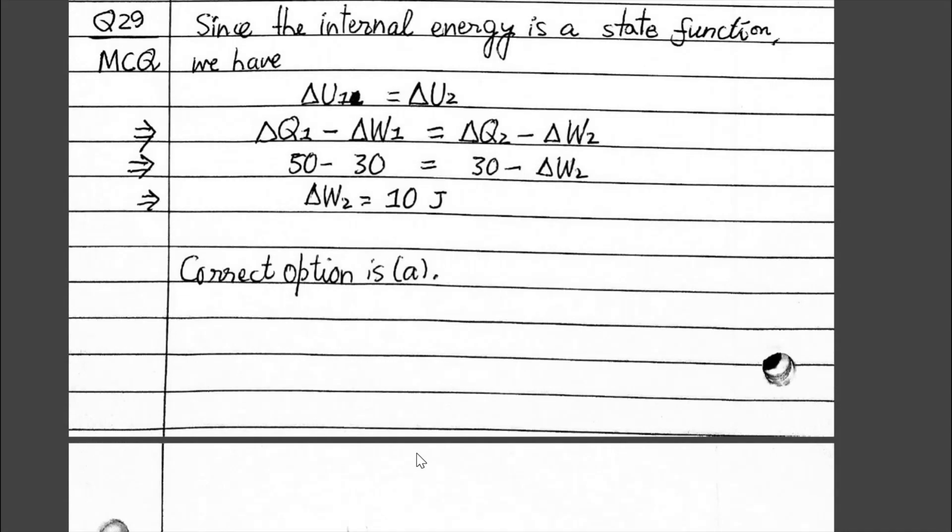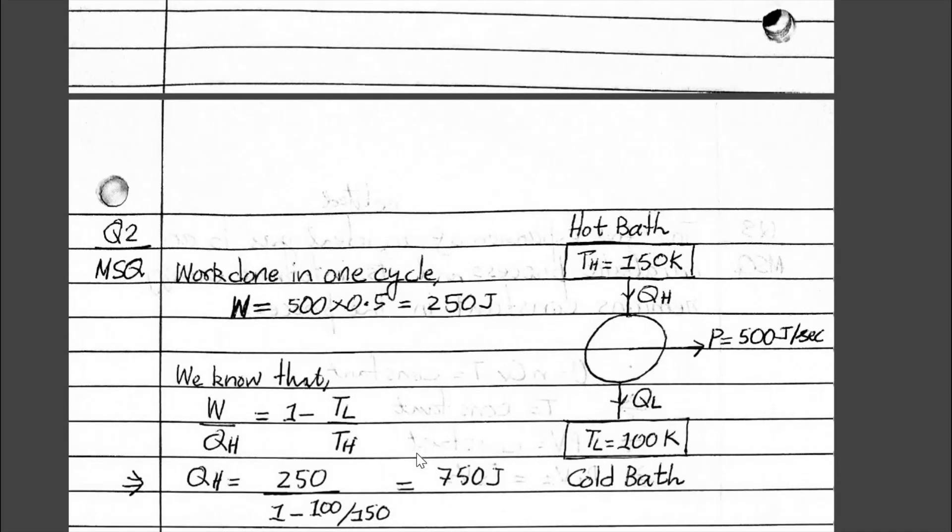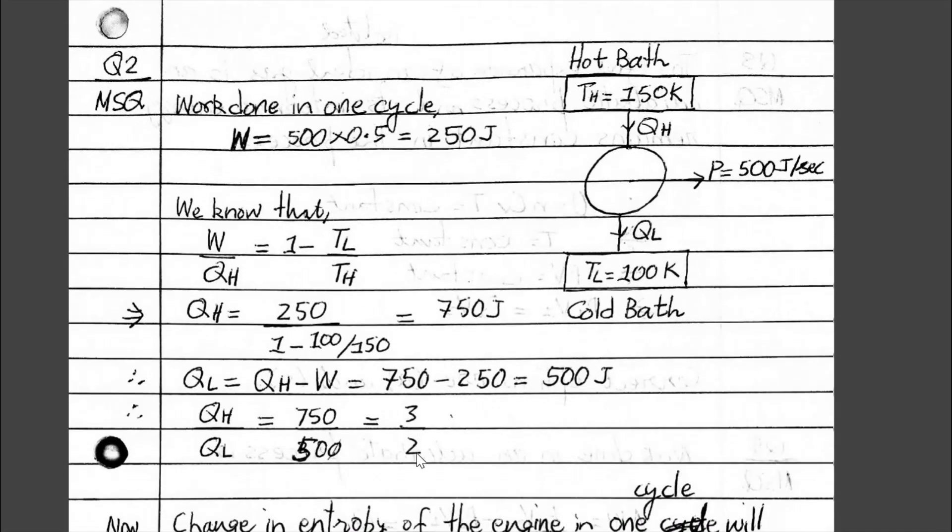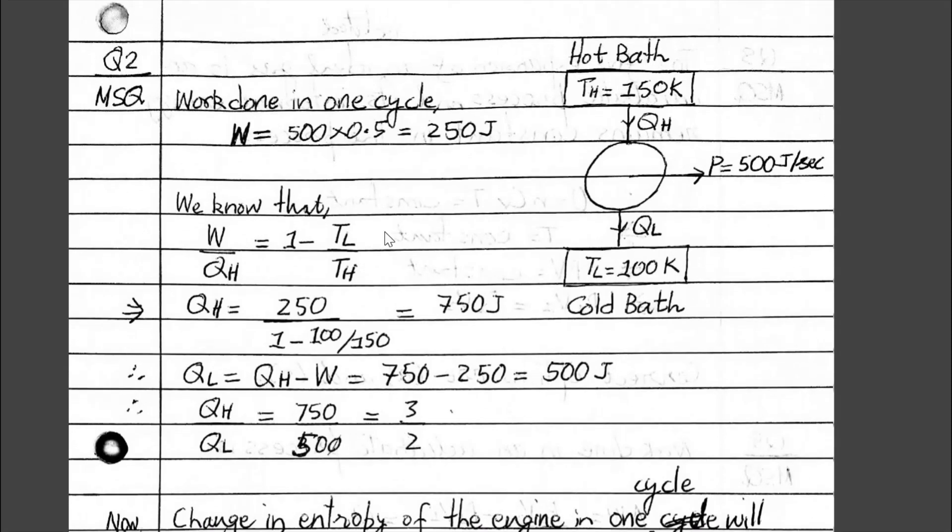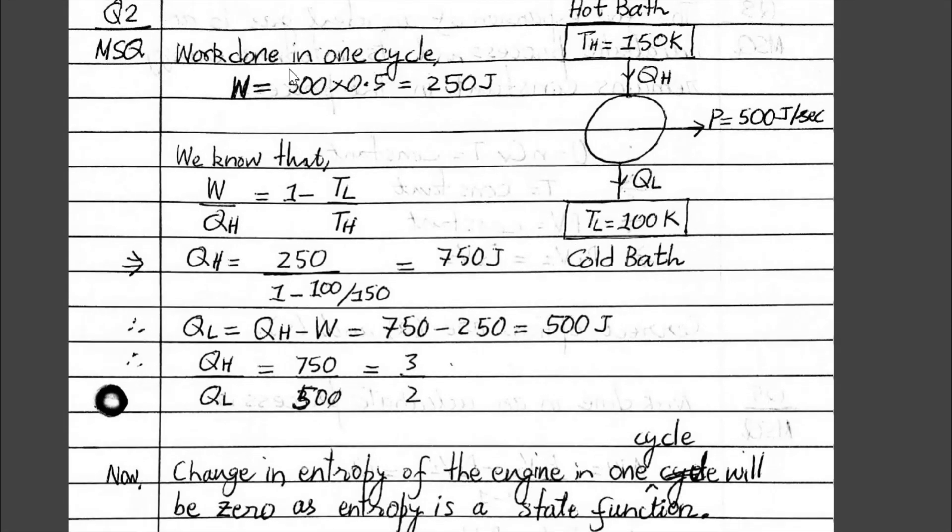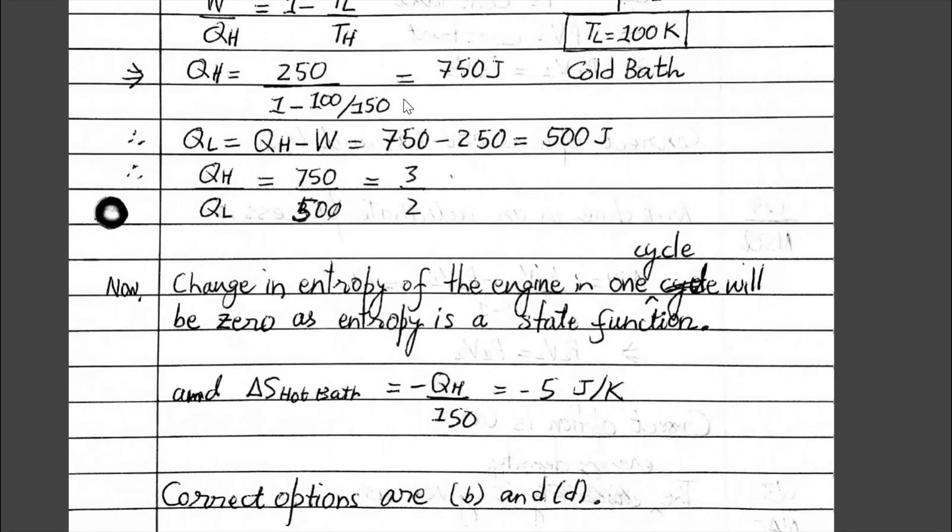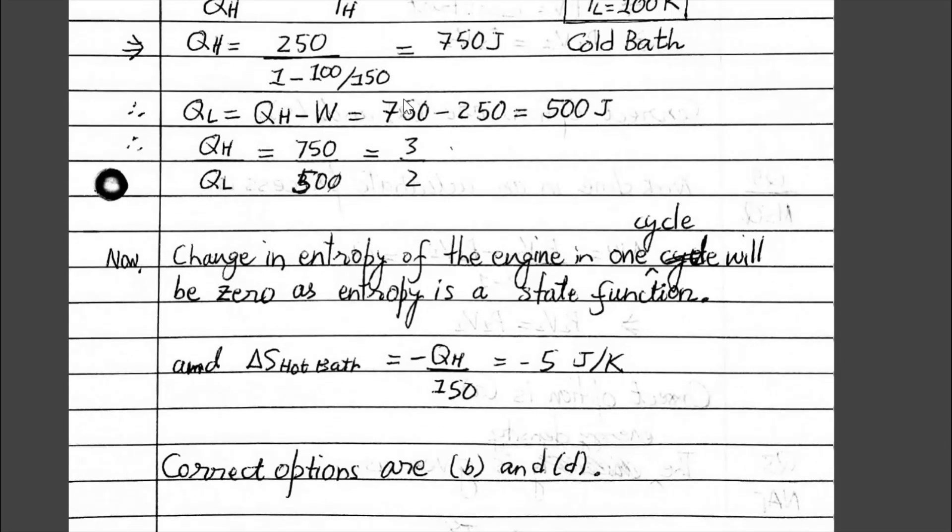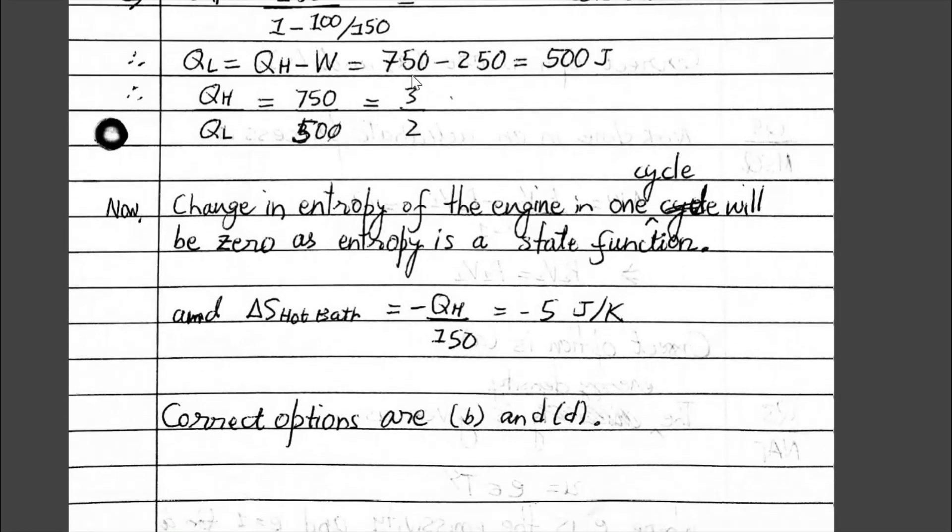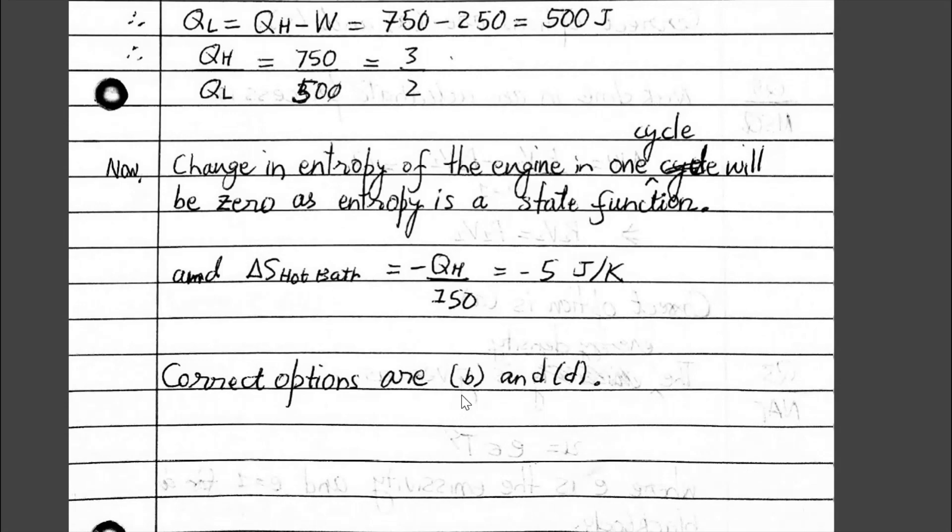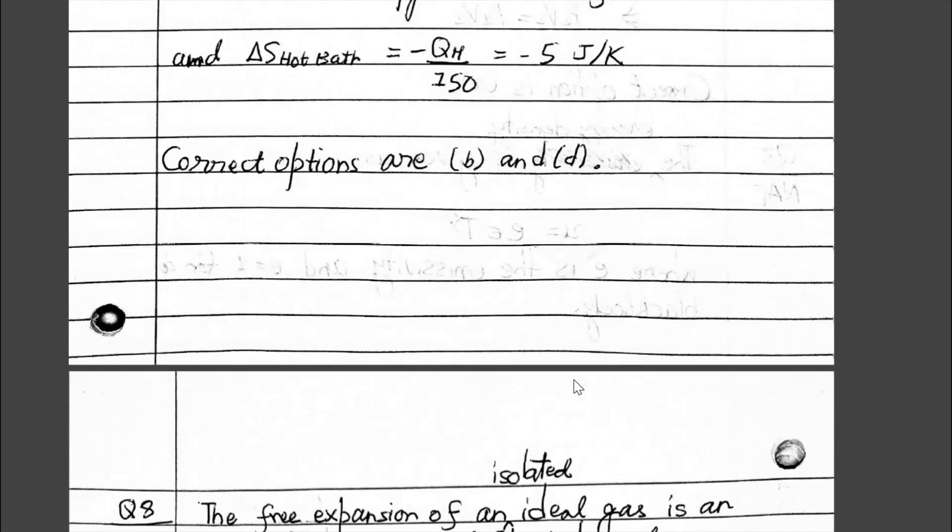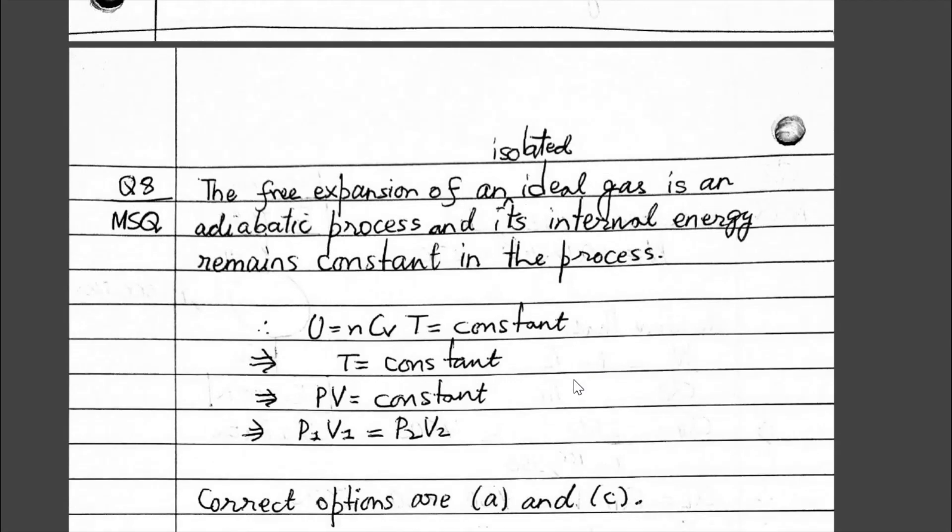The next question is from the MCQ section. This is related to Carnot heat engine. Work done in one cycle is this much, you can see. The correct options are B and D.